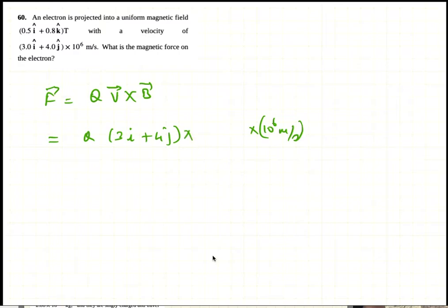Now i cross i is 0, and i cross k is minus j. So we have all these factors, and this is Q times 10 to the 6 meters per second Tesla.